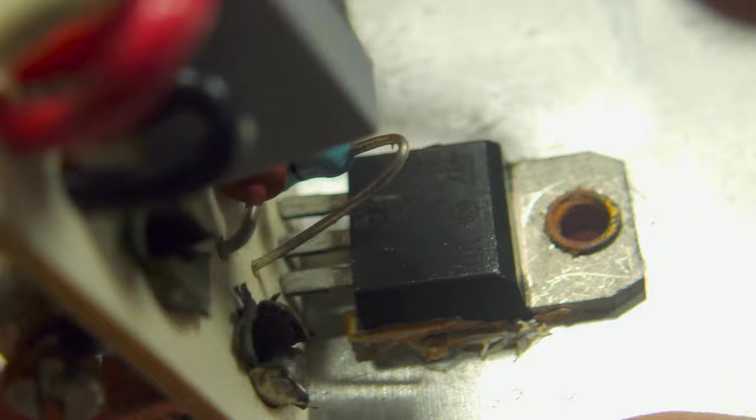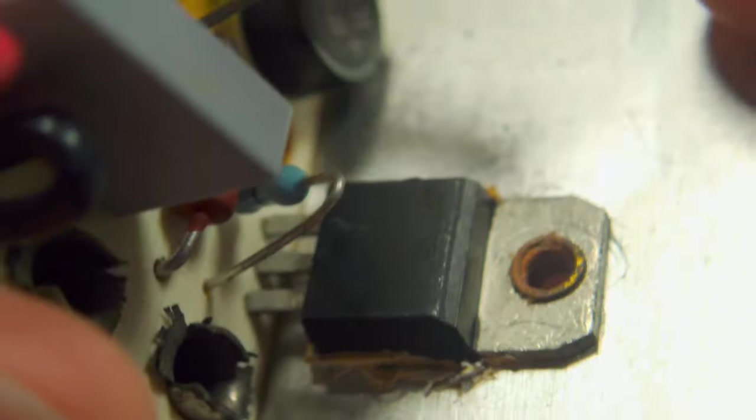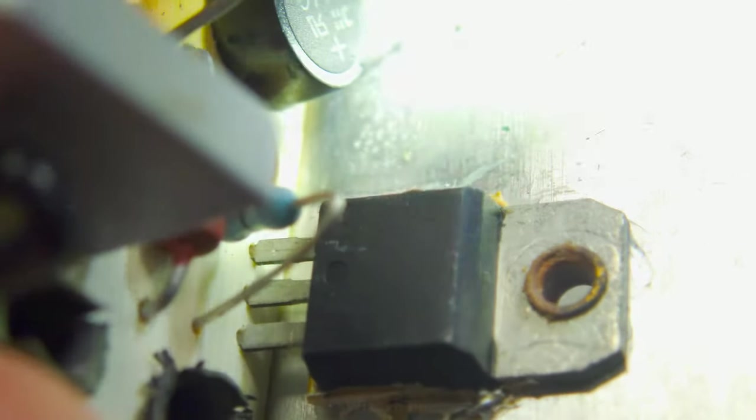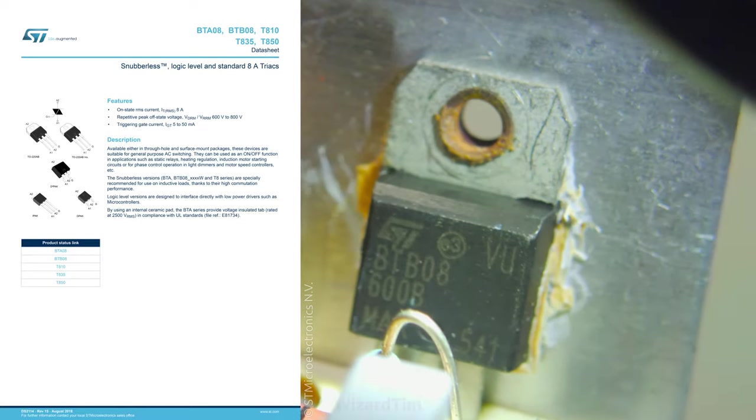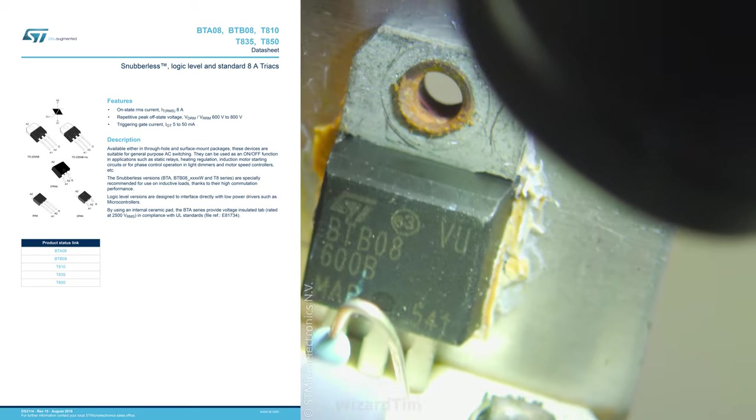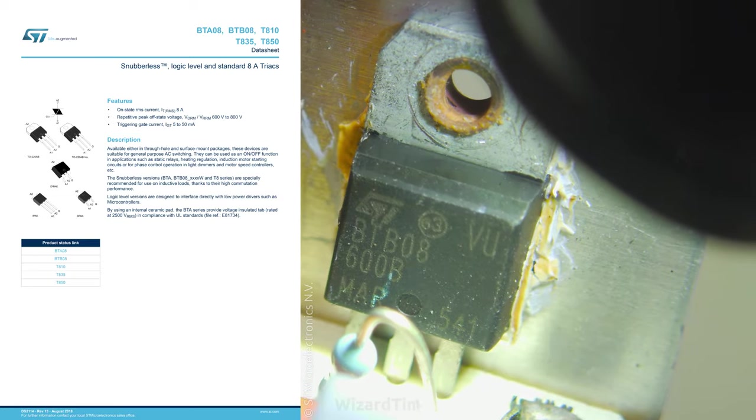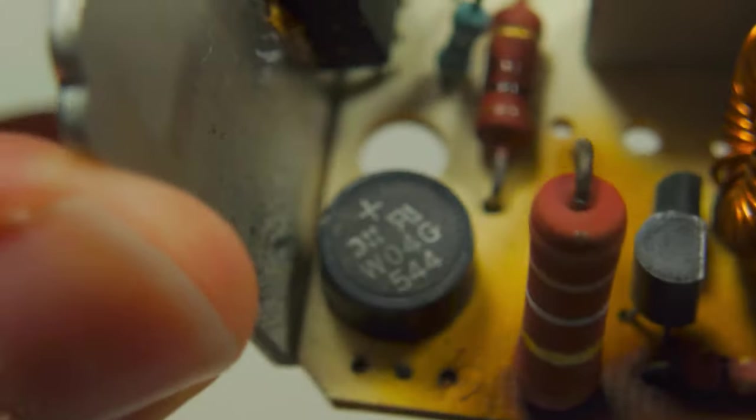Taking a look at this power PCB we can see there's all sorts of power devices that you see in this sort of thing. We have this TO220 device which is a BTB-08, this is a triac which is what switches the load. It's a triac instead of a relay because these PIR sensors quite often turn on and off, so you want it to have a very long lifetime and a relay which is mechanical doesn't last as many cycles as a triac.